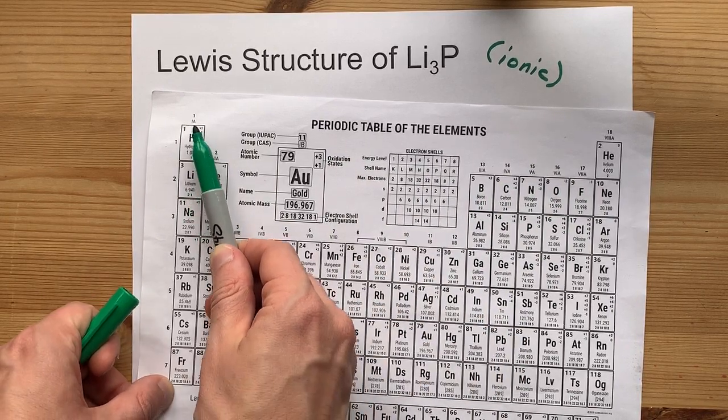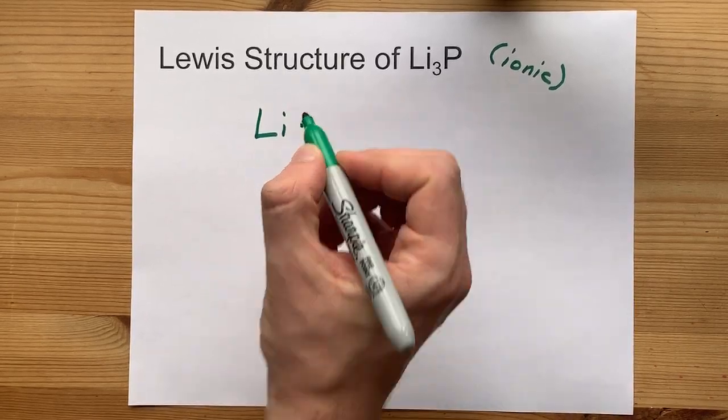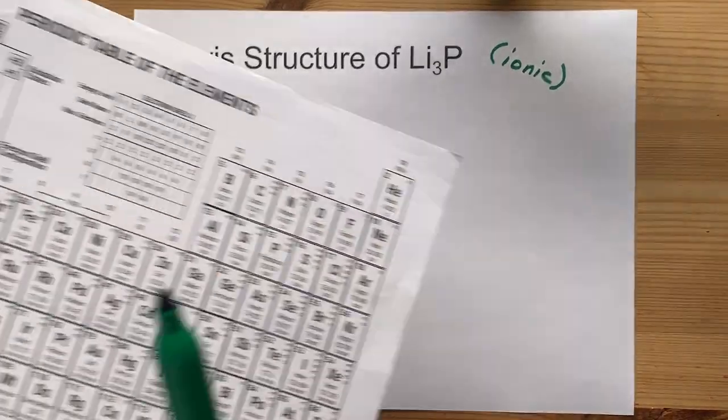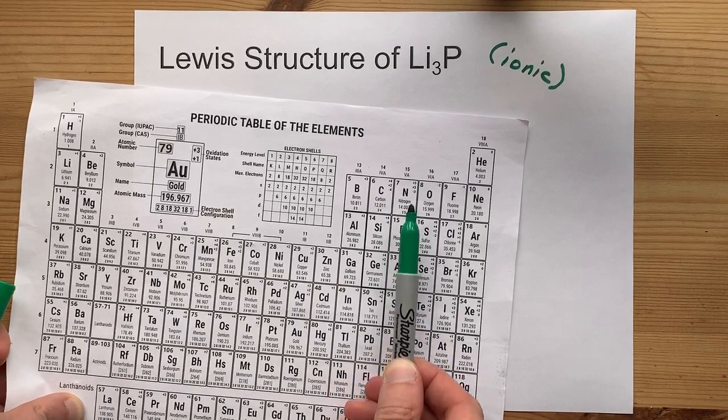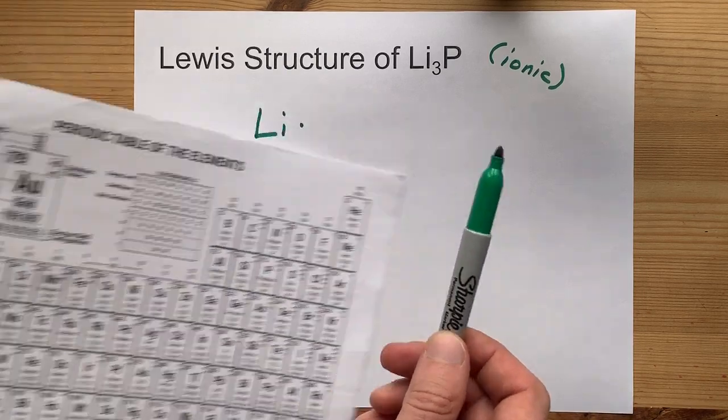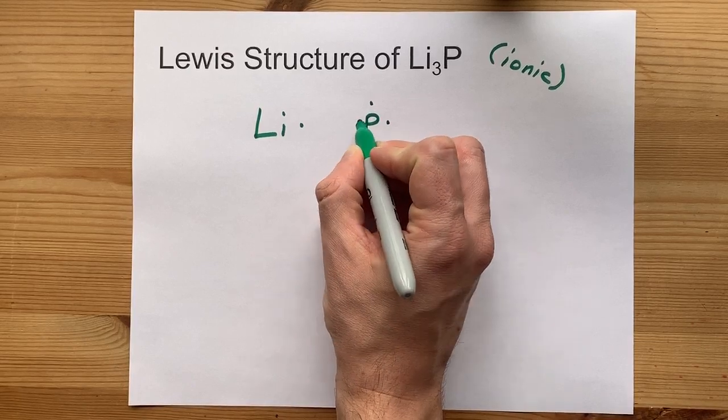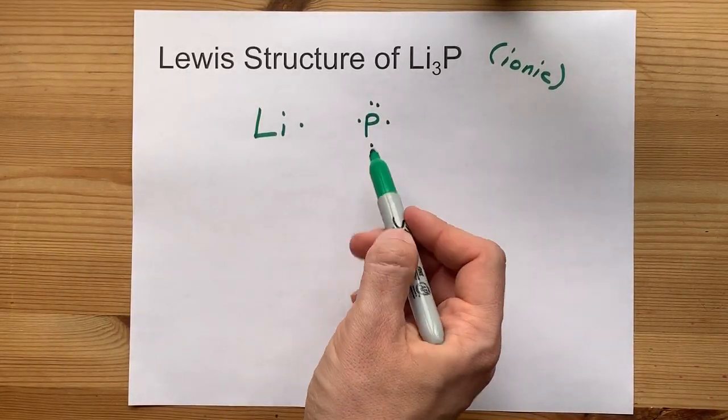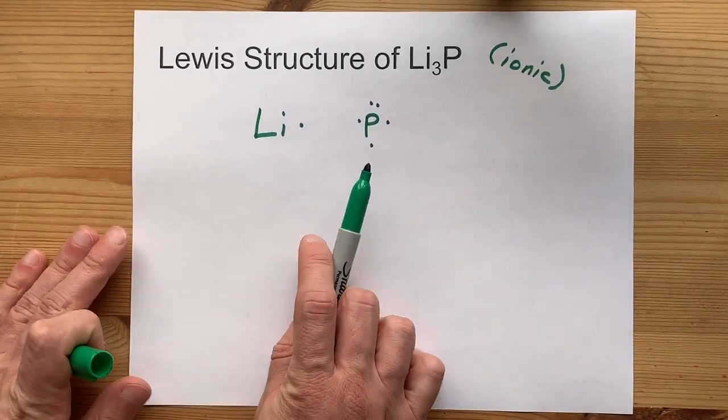Lithium brings one valence electron with it. So draw yourself Li and put a dot there. Phosphorus, in group 15, now I know that says 15, but you're looking up here, it's the 5 here that represents the number of valence electrons it brings. 1, 2, 3, 4, 5. That is an atom of phosphorus, in terms of Lewis dot diagrams.